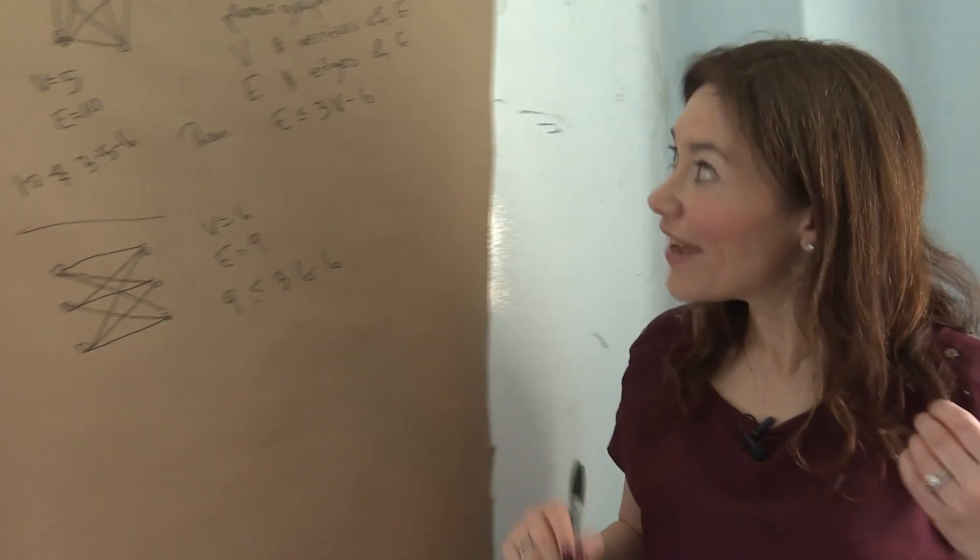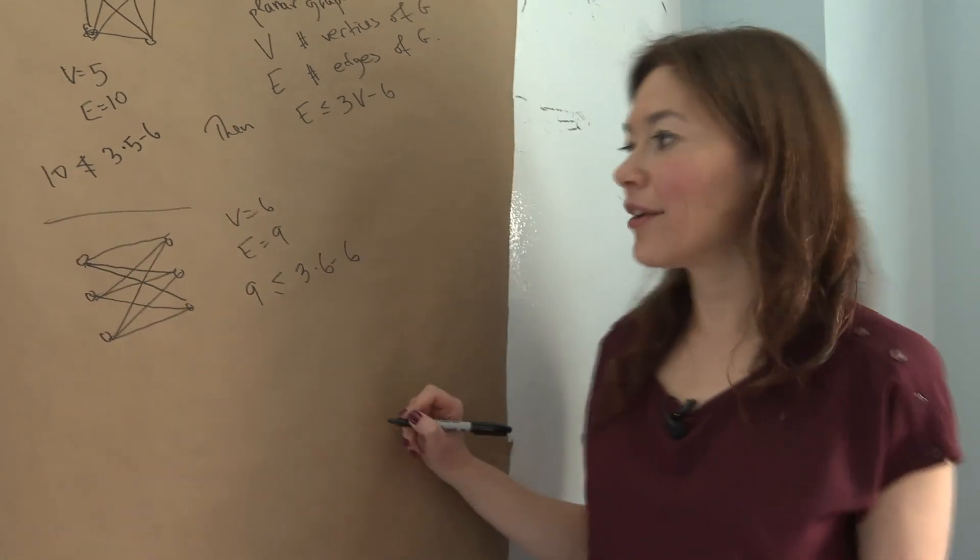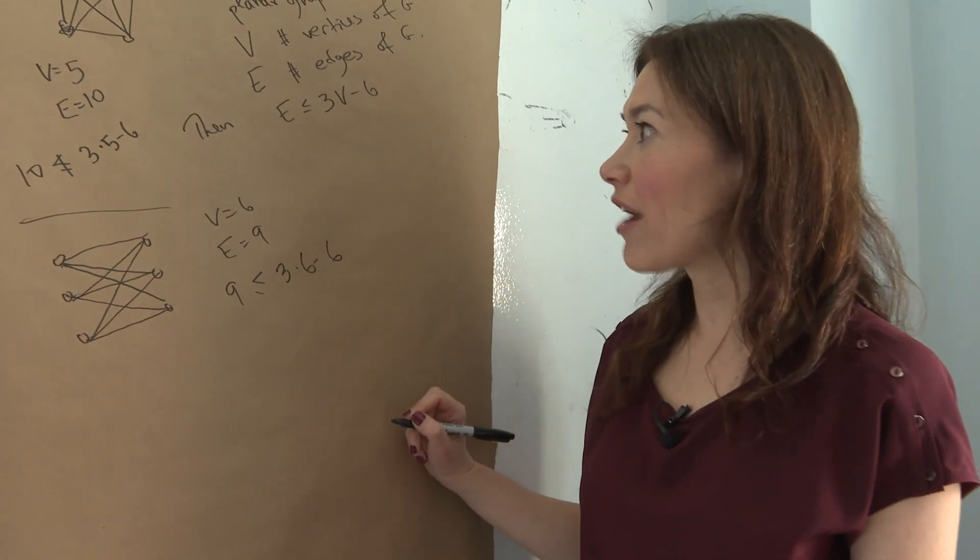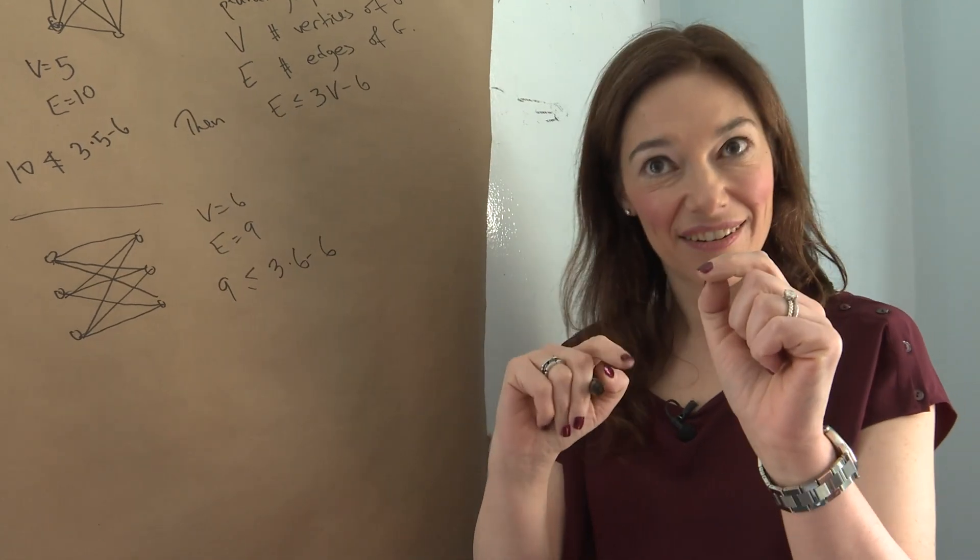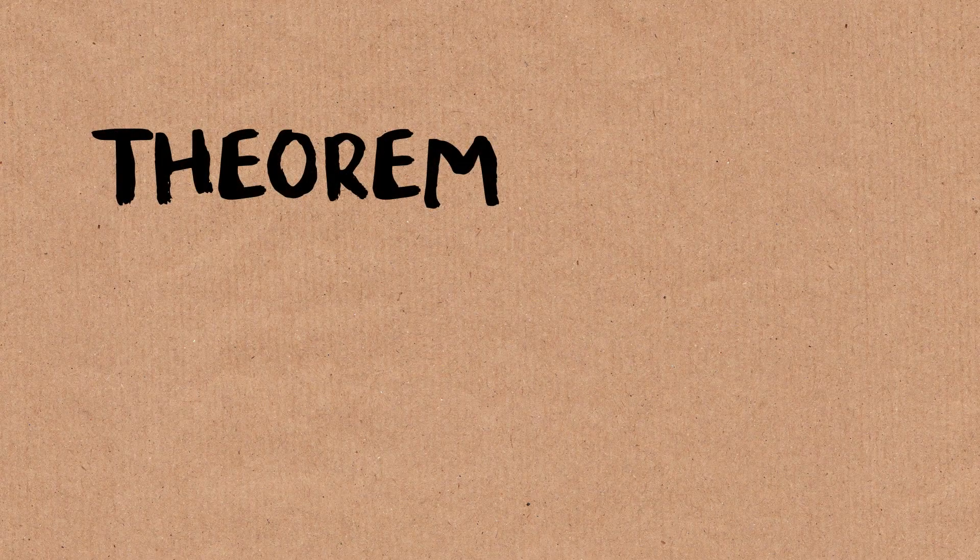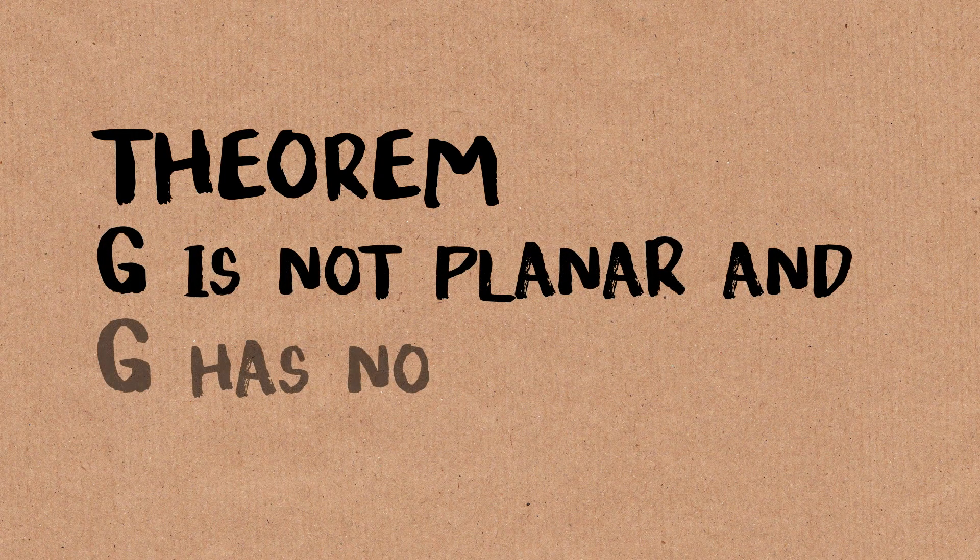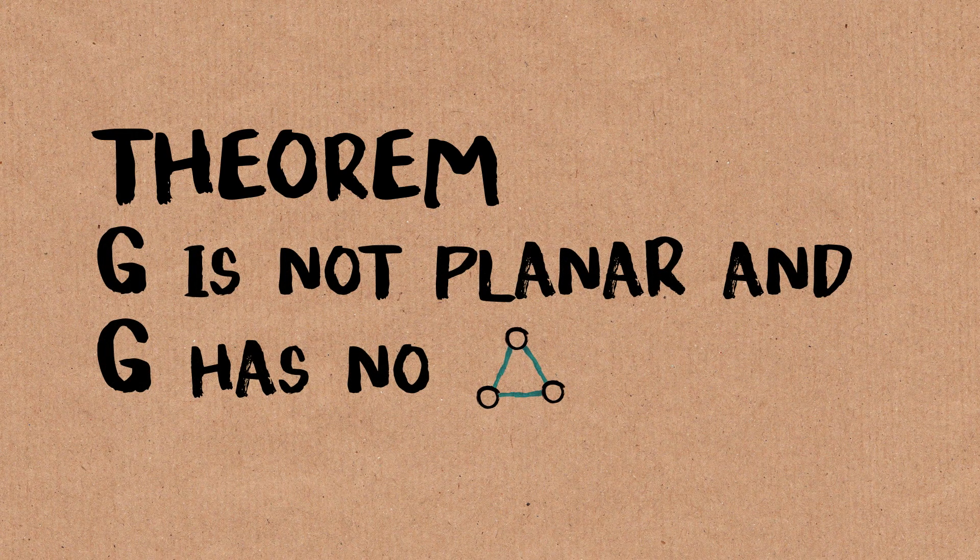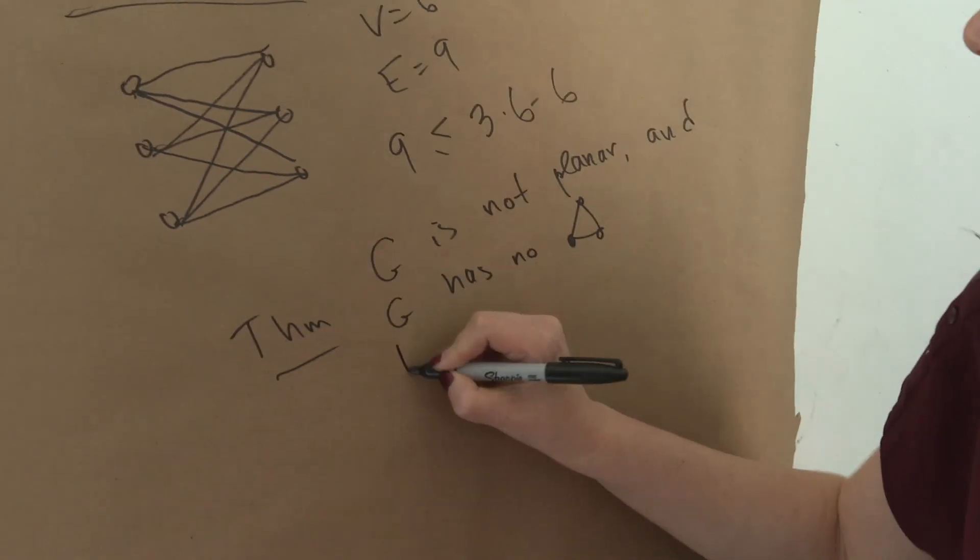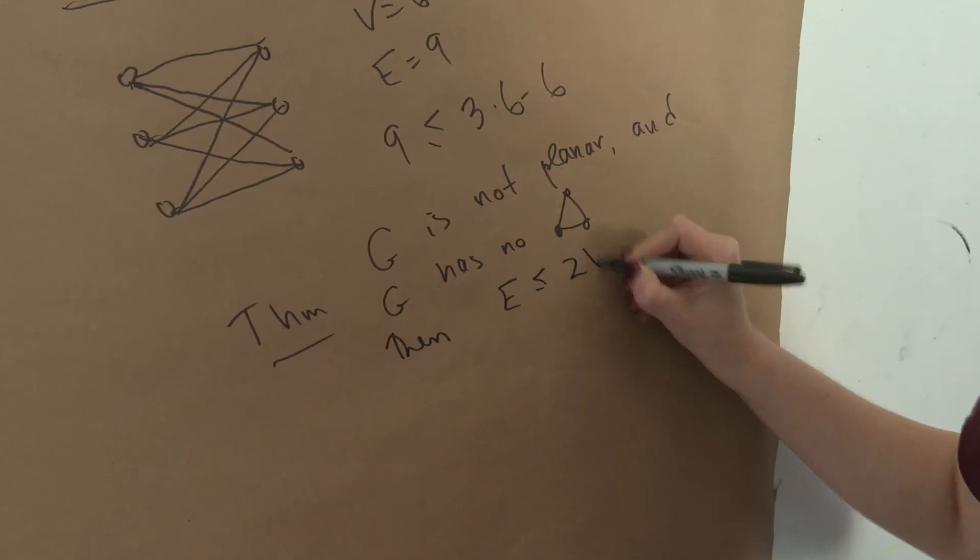But in fact, you can look at the proof of the theorem more closely, and you'll find out that if your graph doesn't have cycles of length 3, then you can improve this. So there's another test. Yes. G is planar, and G has no triangle, then E is at most 2V minus 4. Alright.